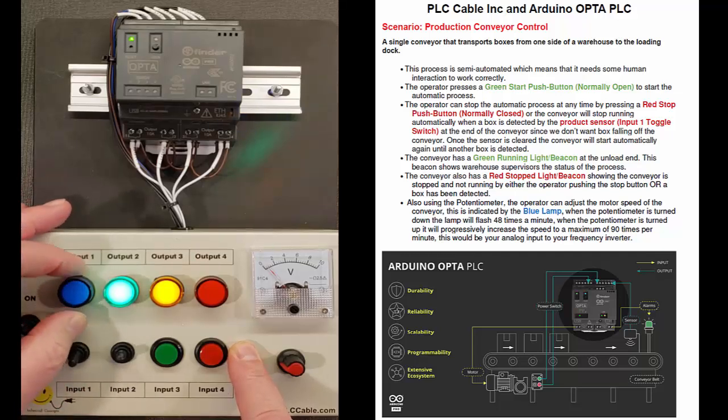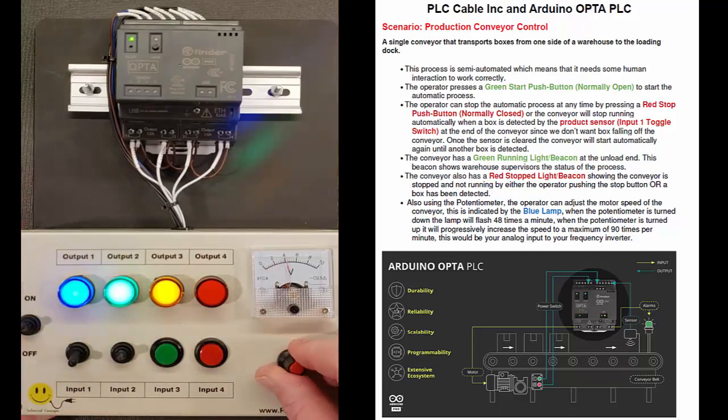Flipping down, the conveyor is cleared, it starts to run again. But that's just the sample of the simple program that you can do with the Opta.